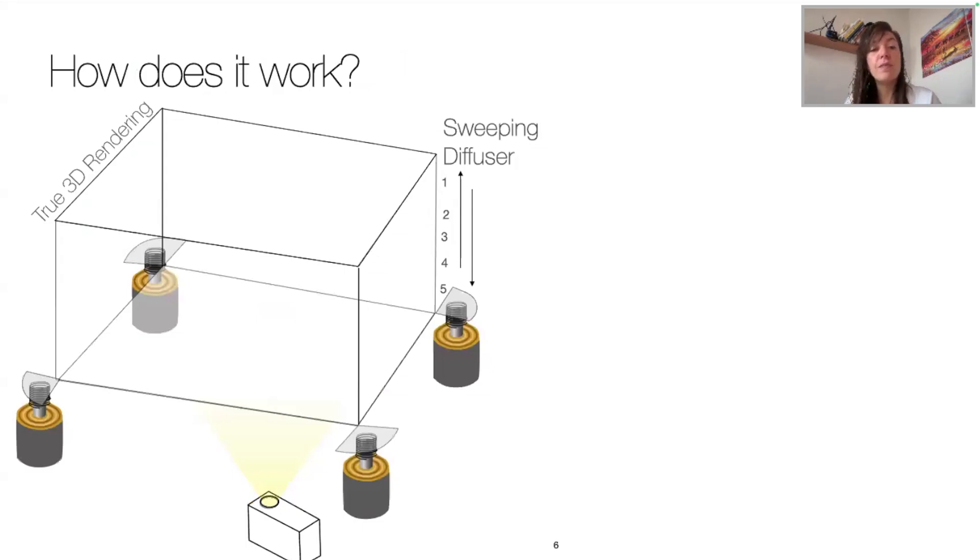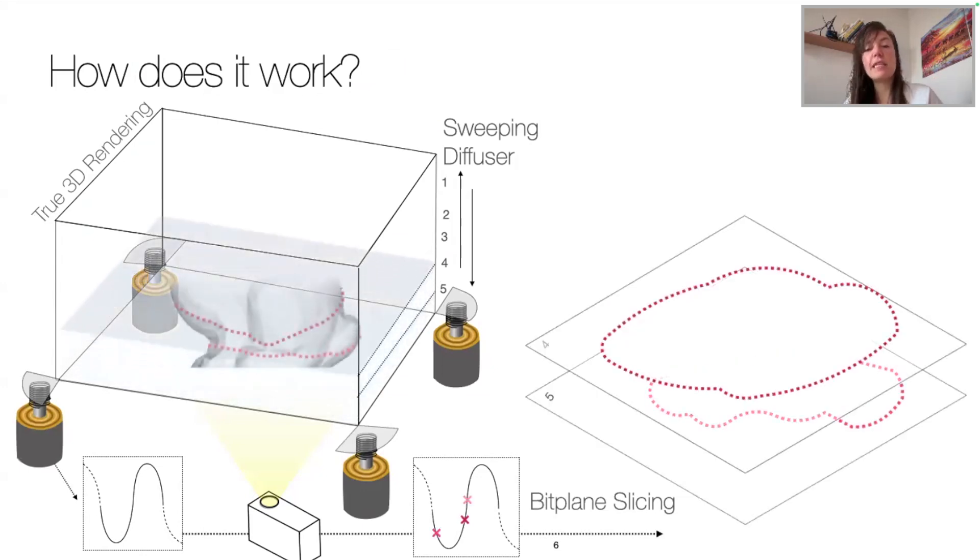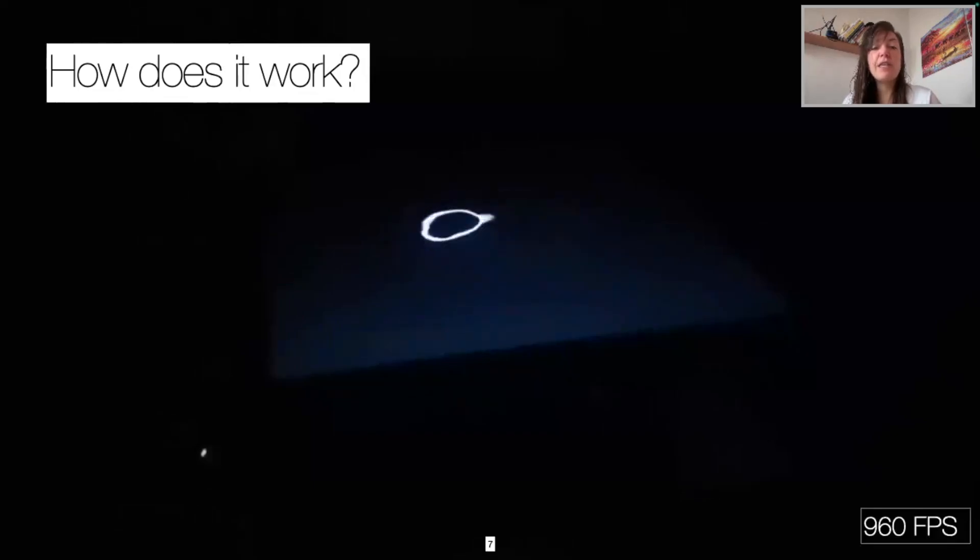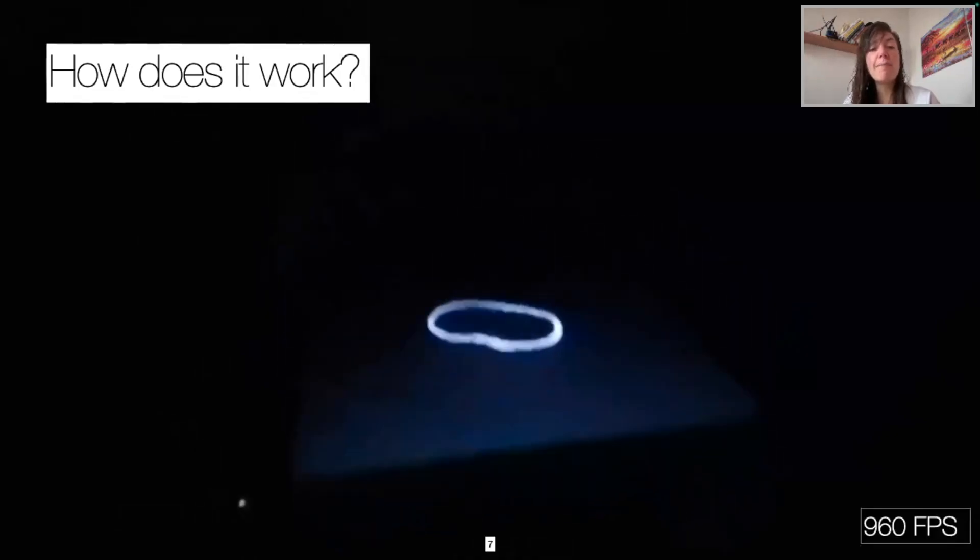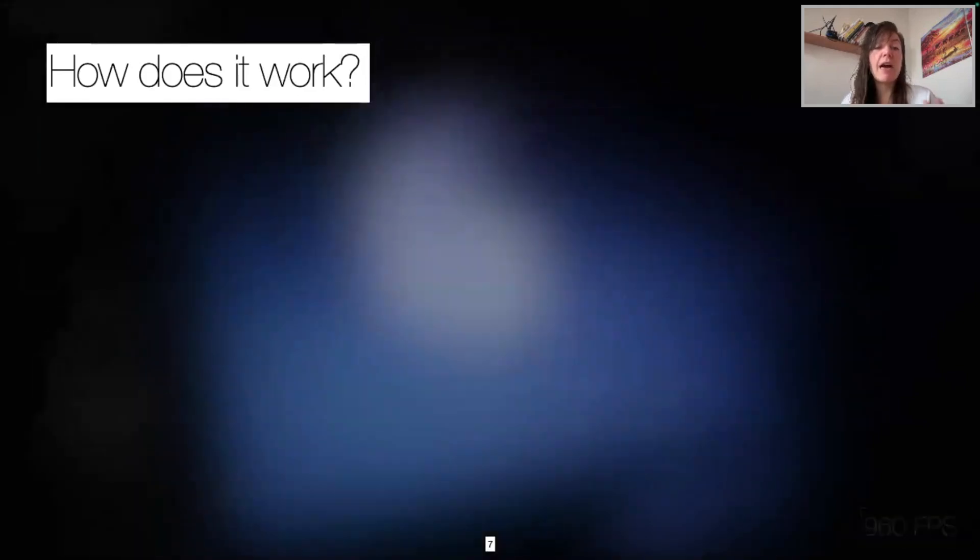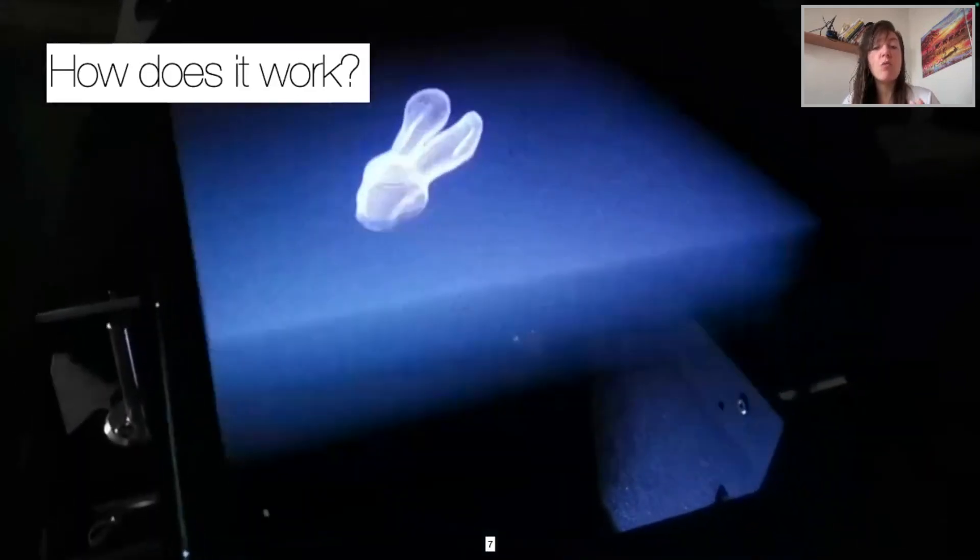But how does it work? Actually, the actuators follow a sinusoid which is synchronized with the projector, slicing the 3D objects into bit planes. Each slice appears along the sinusoid and represents a cut section of the 3D object. Altogether, they render the full object. So thanks to a high-speed video capture, we can see here the rabbit appearing as slices, and when the sweeping occurs, each of the bit planes being projected at a different height. At a higher speed, with persistence of vision, we find the rabbit again.